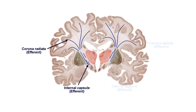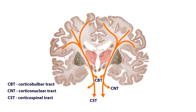Efferent fibers are mostly concerned with motor function, either directly as axons of upper motor neurons, or indirectly via projections to the striatum of the basal nuclei. Motor neurons in the corticospinal, corticobulbar, and corticonuclear pathways project from the motor regions of the cortex, passing between the thalamus and the lentiform nucleus, and onto the crus cerebrae.